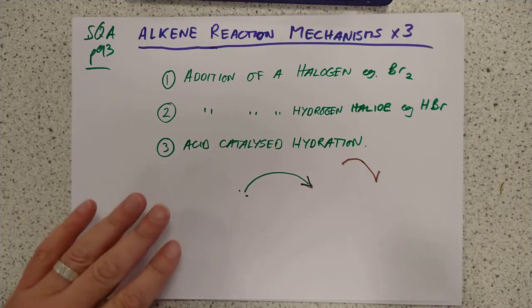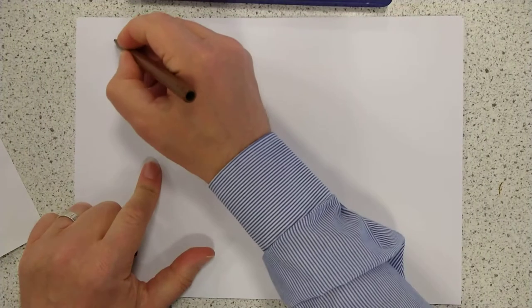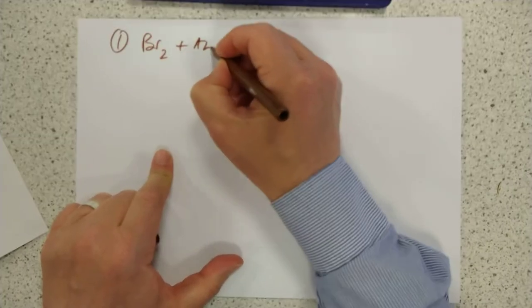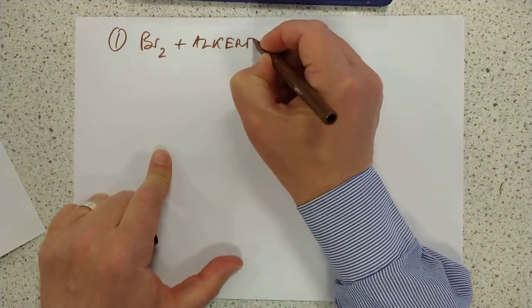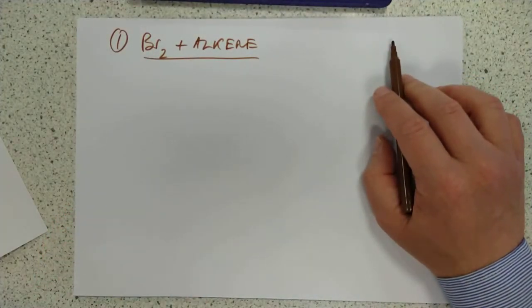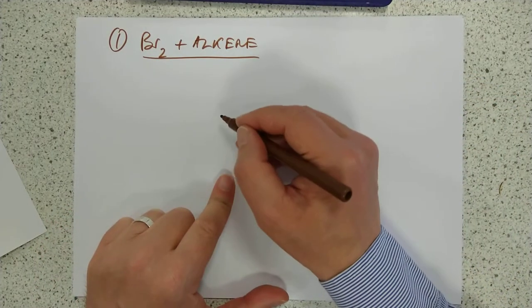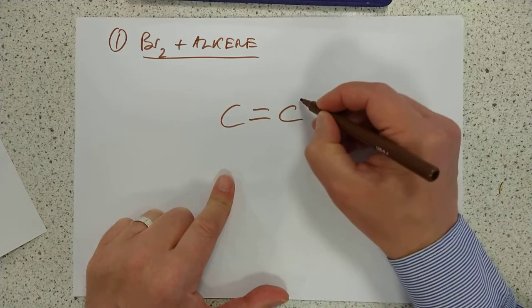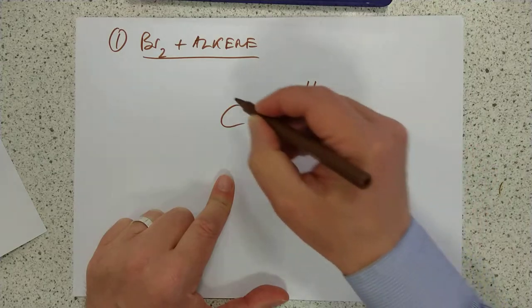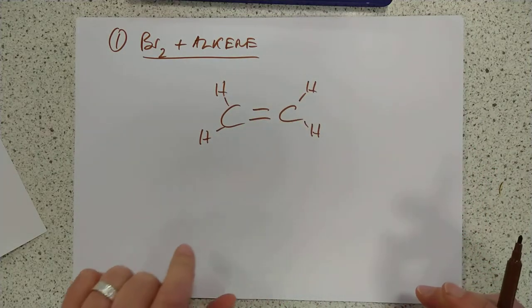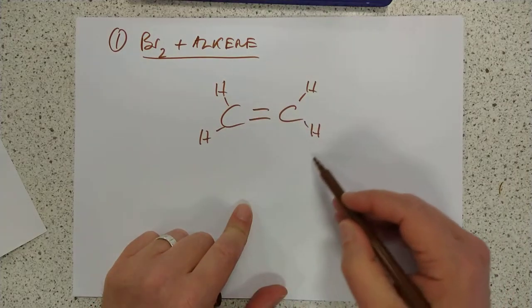Let's have a look at the first one. This is Br2 and an alkene. If you haven't watched the video on the true nature of molecular orbitals, go watch it now. Because I'm assuming that you realize that this double bond is a big cloud of electron density, a big cloud of negativity in space, much like your average conspiracy theorist.